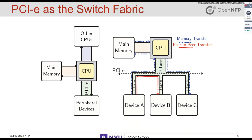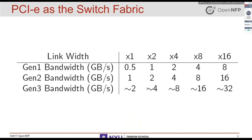The CPU is used only for controlling the fabric - basically scheduling transfers between devices or between devices and memory. With an X8 link, which is typical for cheaper cards, you can do around 8 gigabit per second per lane, translating to around 60 gigabit per second per direction. PCI Express version 4 will double that. So we have quite a high-capacity fabric in PCI Express, and it's up to us to leverage it with good scheduling.